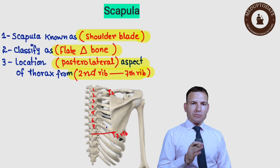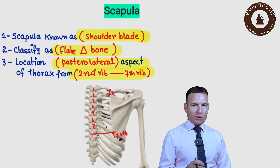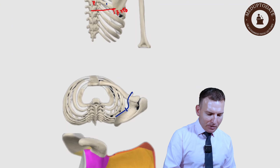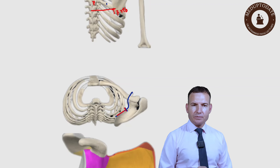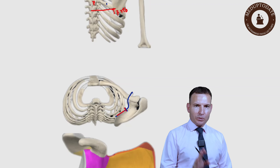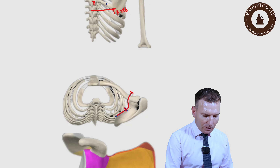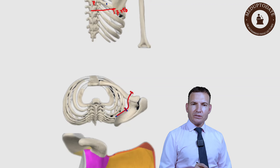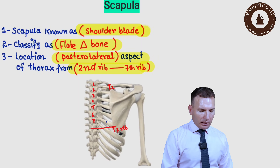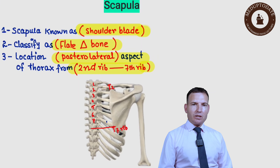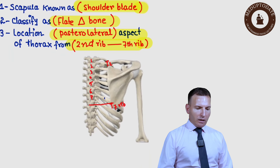The scapula is located posterolaterally on the upper side of the thorax. It is named 'posterolateral' because half of the surface of this bone is located posteriorly and half of the surface is on the lateral aspect. This is why it is described as being in the posterolateral aspect.